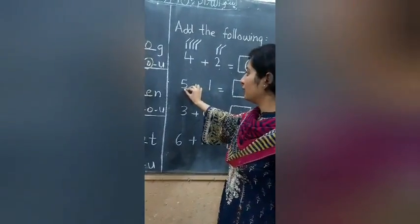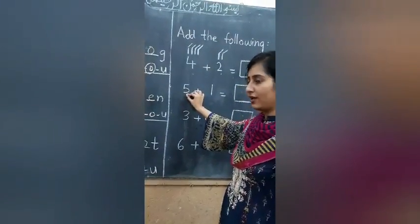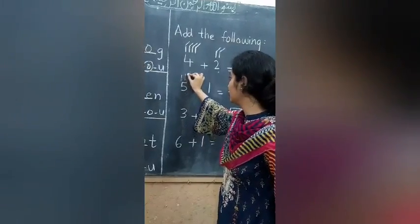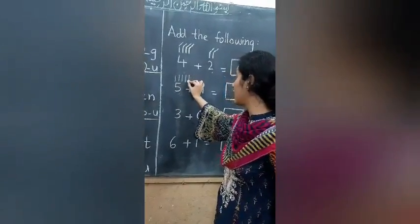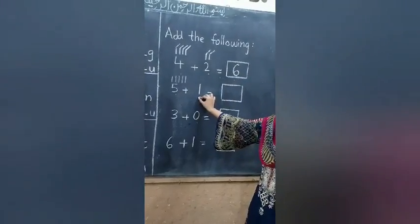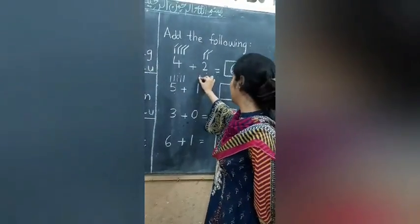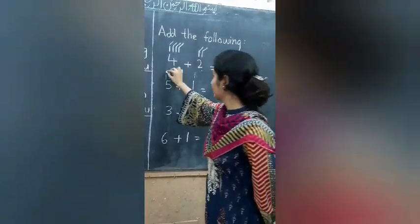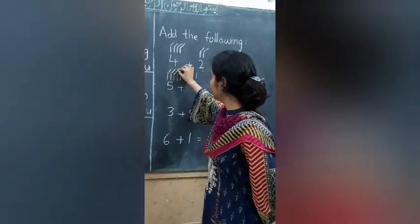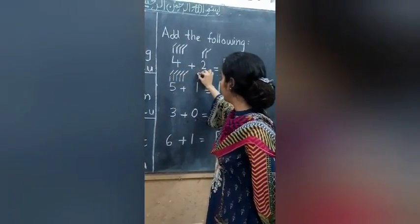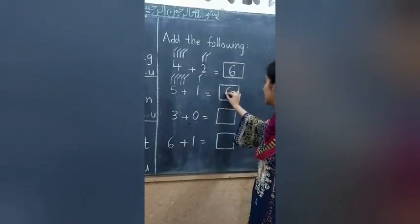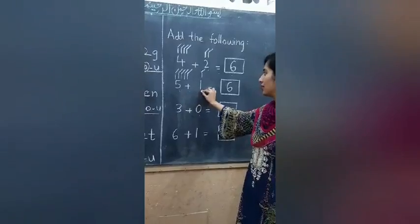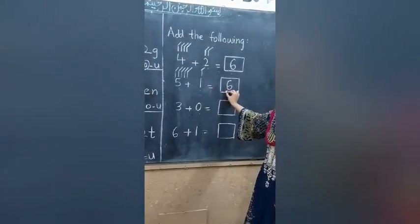Now next. Which number is this? 5. How many lines will we draw? 5. 1, 2, 3, 4, 5. Which number is this? 1. Now join them. 1, 2, 3, 4, 5, 6. Answer is 6. 5 plus 1 is equal to 6.